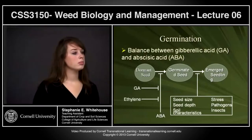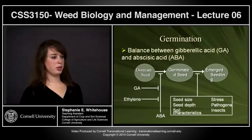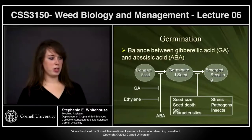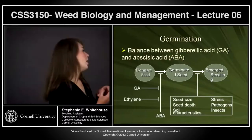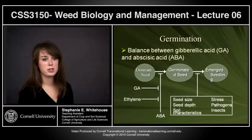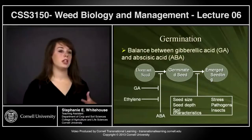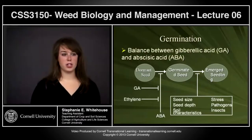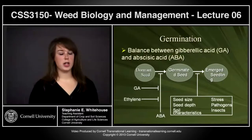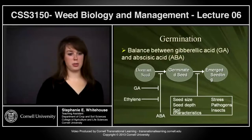ABA is a germination inhibitor — it stops the growth of your shoot apical meristem and root apical meristem within the embryo of the seed. Whereas gibberellic acid is a germination promoter. GA works by inhibiting ABA, and also by promoting the breakdown of the starches within the endosperm of the seed, which can then be used for respiration and metabolic activities.